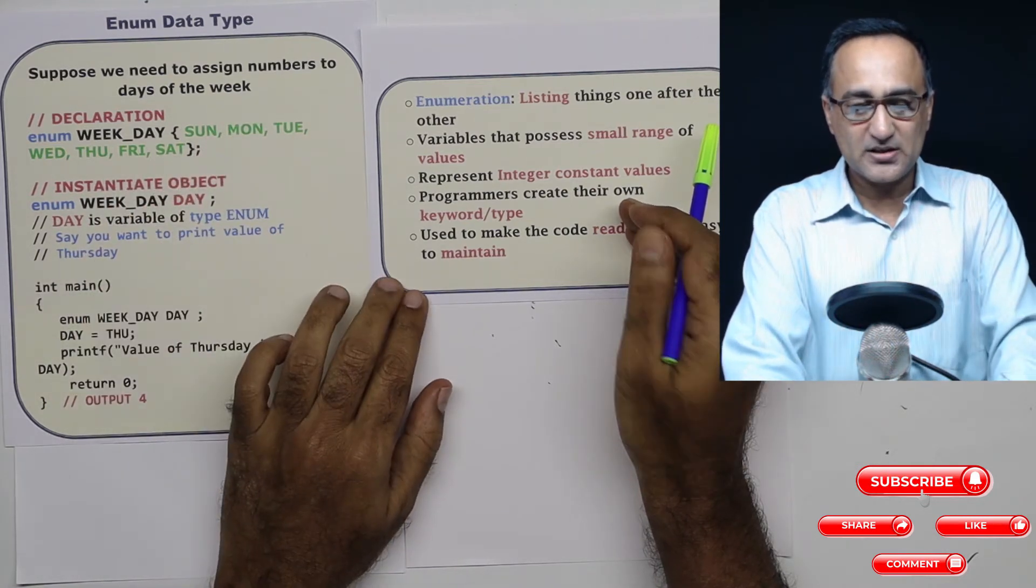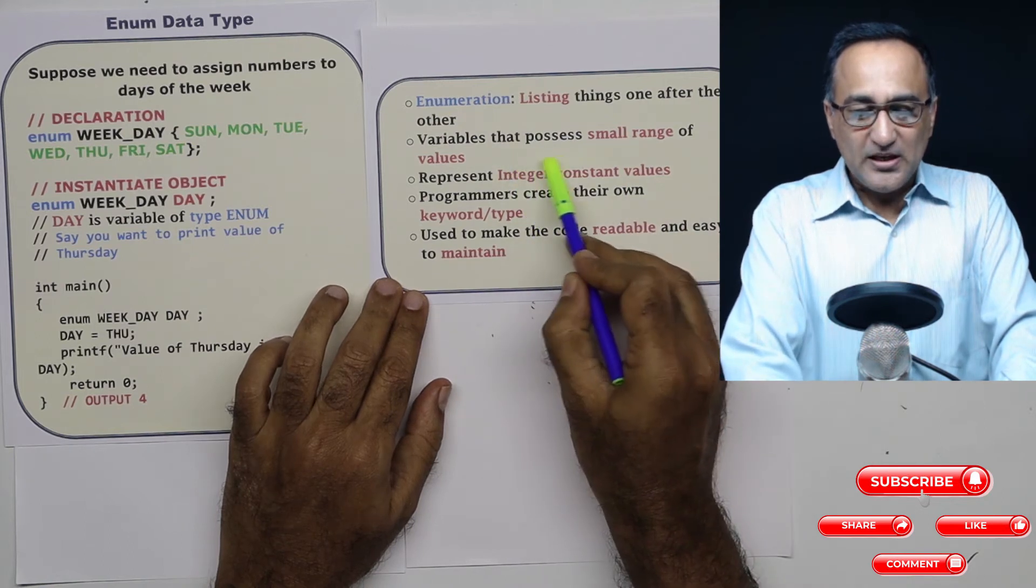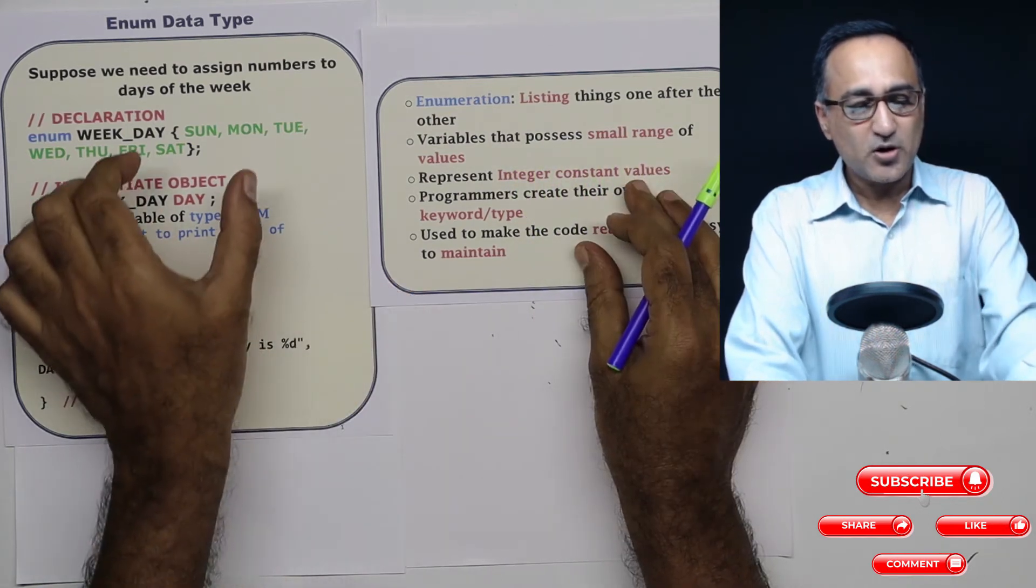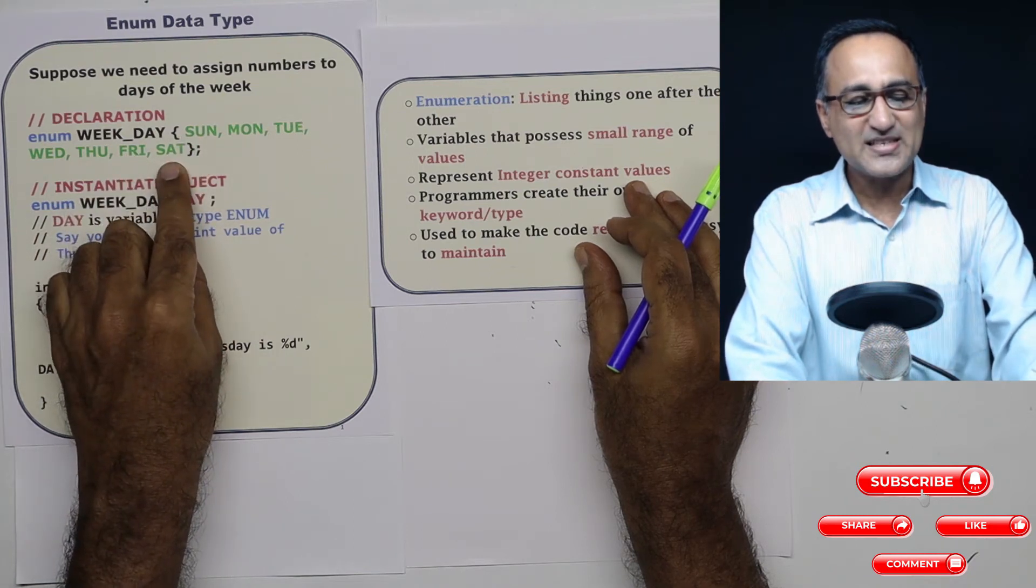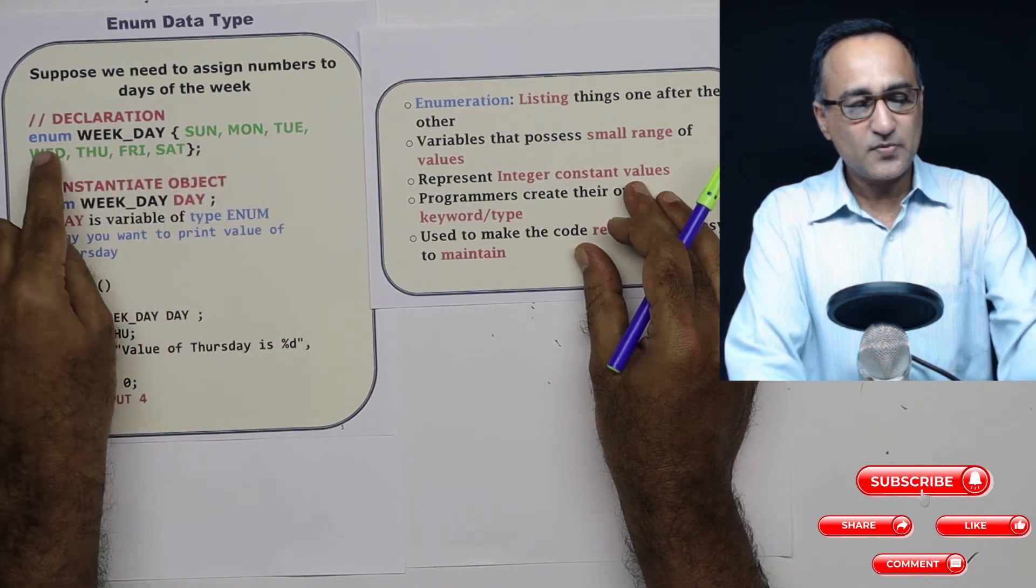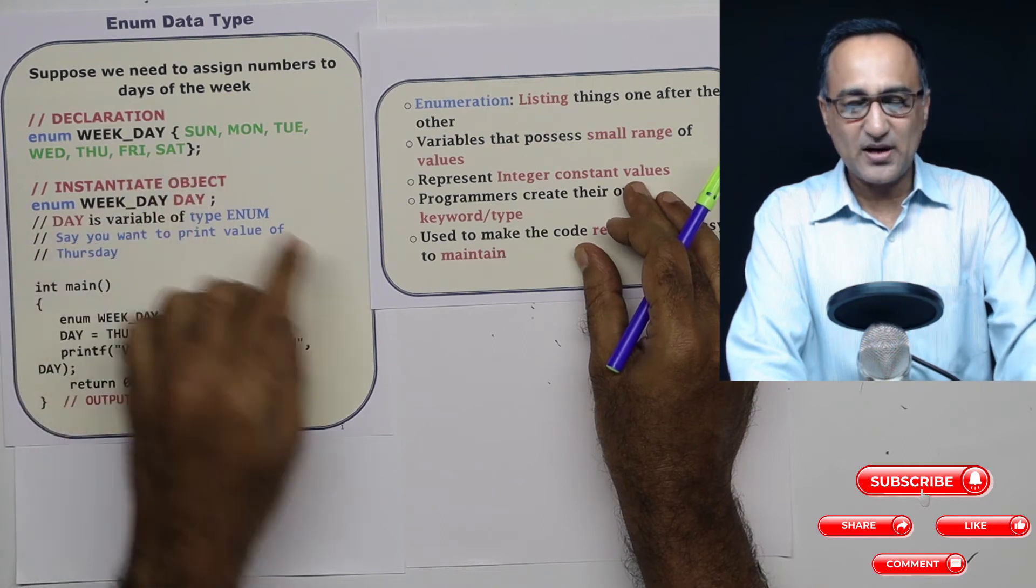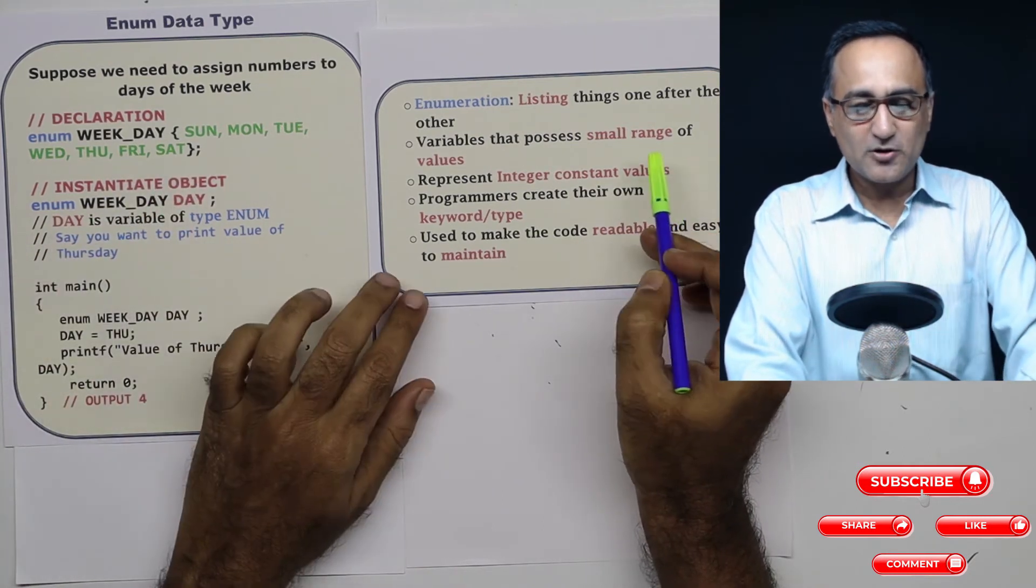So enums are variables that possess a small range of values here. If you see the first value is 0, the last value is going to be 6, 0, 1, 2, 3, 4, 5 and 6. So they possess a small range of value. These values or states represent integer constants.